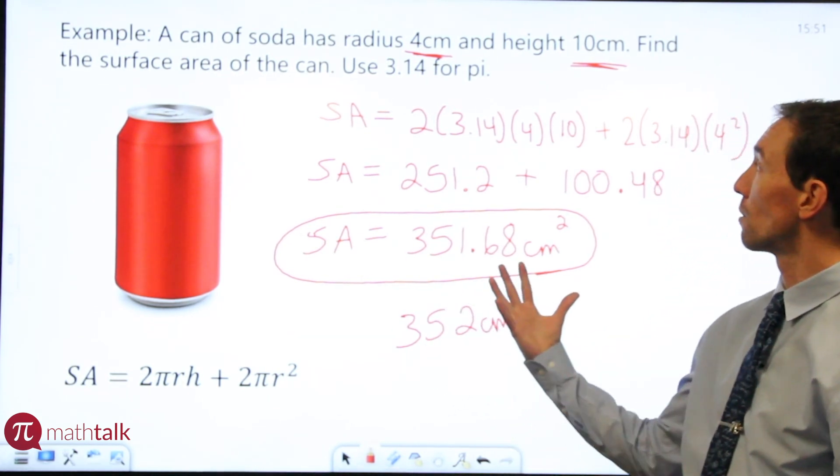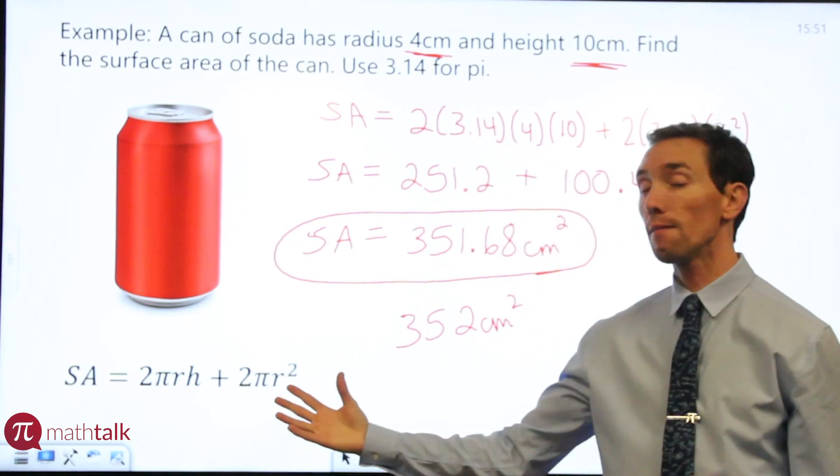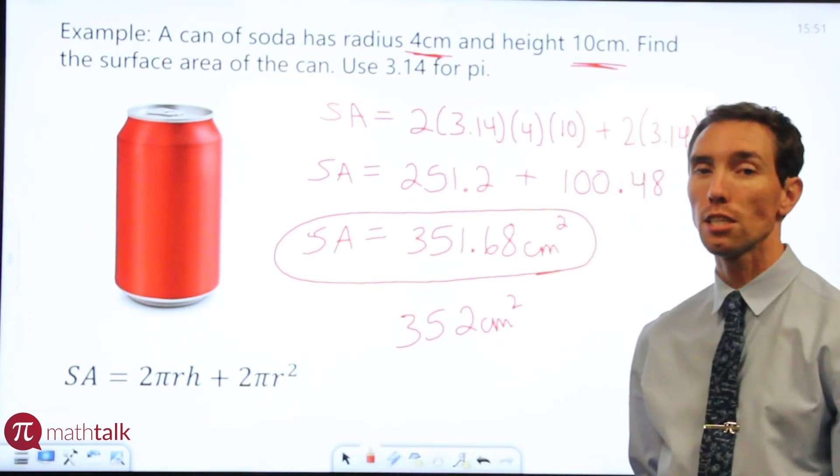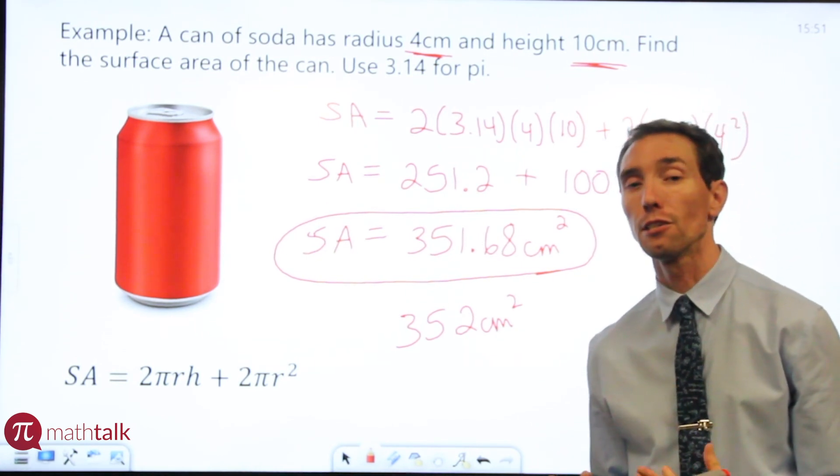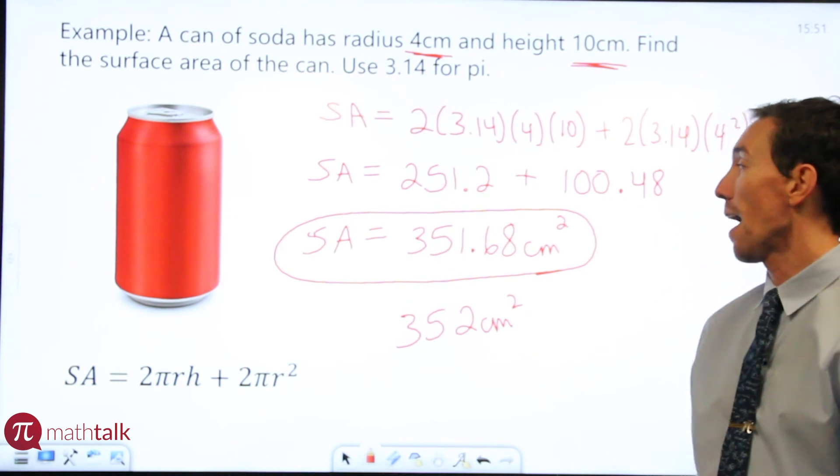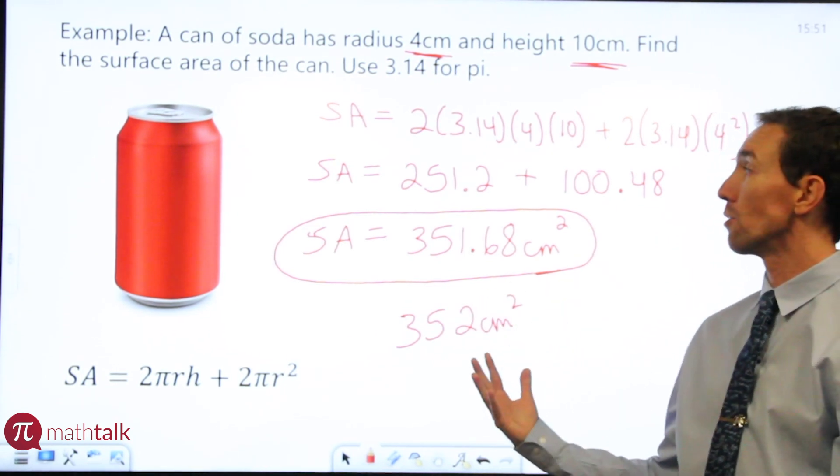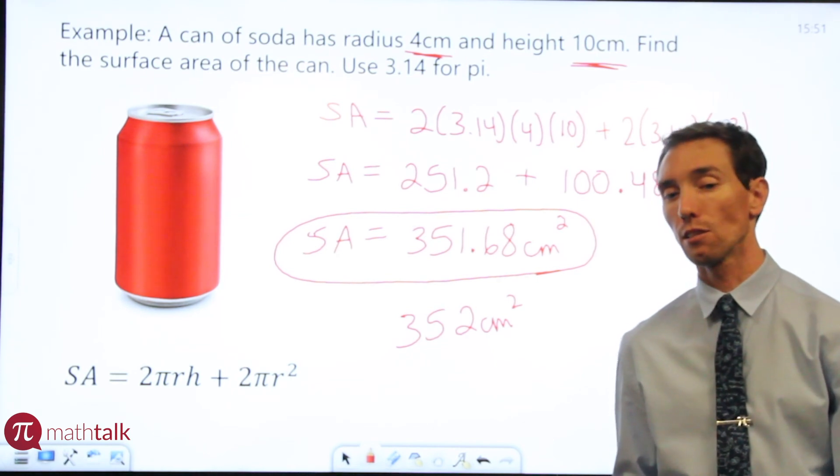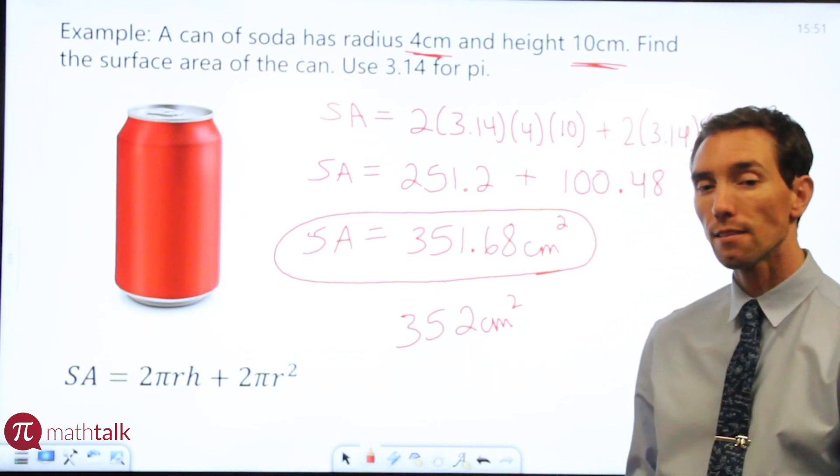But nonetheless, what you want to do is take the information you're given, plug it into your formula, which is definitely found on your reference sheet. Again, I recommend using that. It's to your advantage and to your benefit. So definitely use it. And then go ahead and solve it using order of operations and your calculator to find those calculations. So I hope this helps as you find the surface area of cylinders.